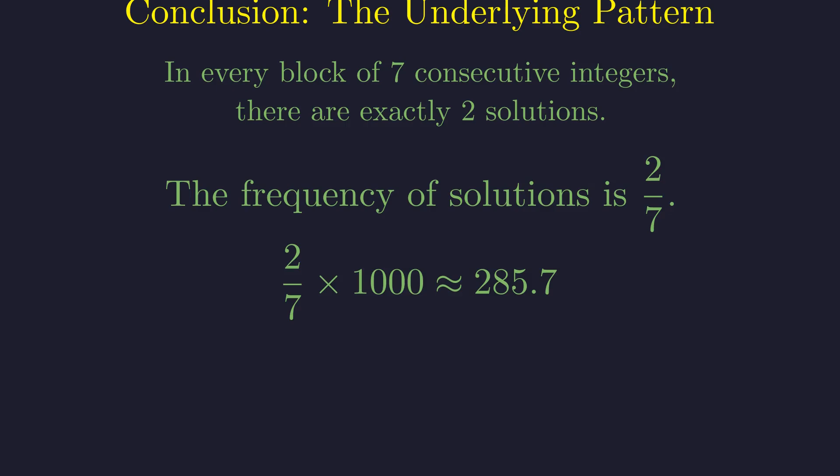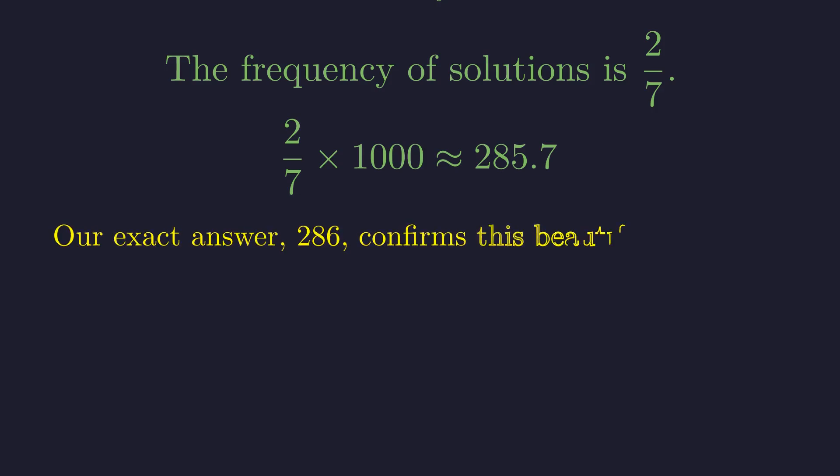This implies that the solutions occur with a constant frequency of 2/7. If we estimate this over our range, 2/7 of 1,000 is approximately 285.7. Our exact count of 286 aligns perfectly with this expectation.